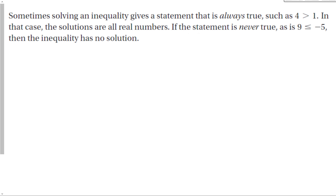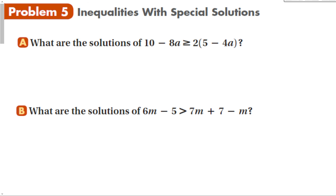Sometimes solving an inequality gives a statement that is always true, like 4 is greater than 1. In that case, the solutions are all real numbers. If the statement is never true, like 9 is less than or equal to negative 5, then the inequality has no solution. This happens when all the variables cancel out and you check whether the remaining statement is true or false.